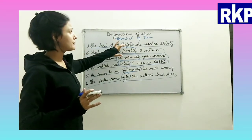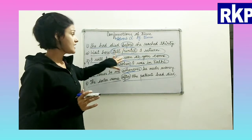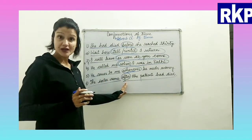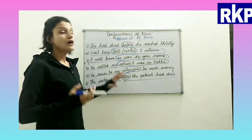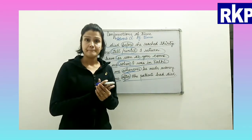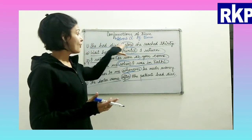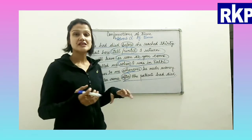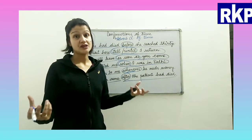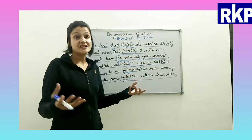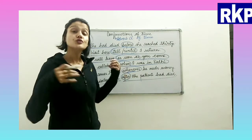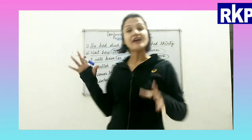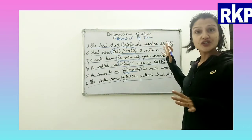So the subordinating conjunctions of time include: before, till, until, as soon as, when, whenever, and after. All these conjunctions tell us the time of the action — they always give us the answer of when something happened. That is the reason they are always used to introduce the adverb clause of time.